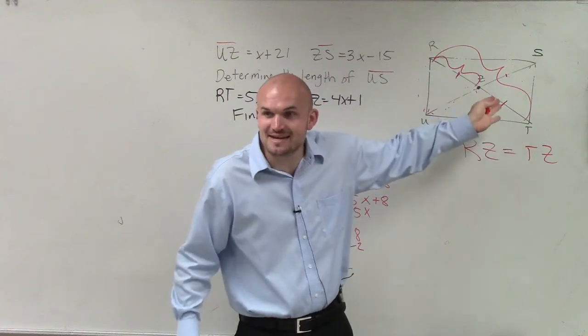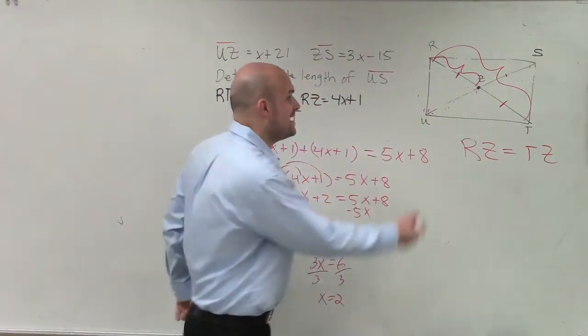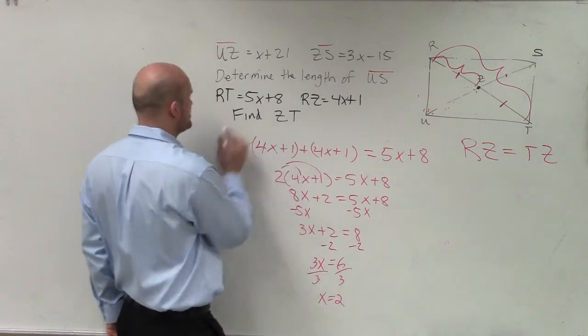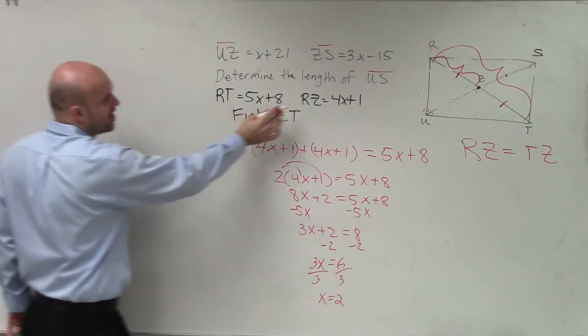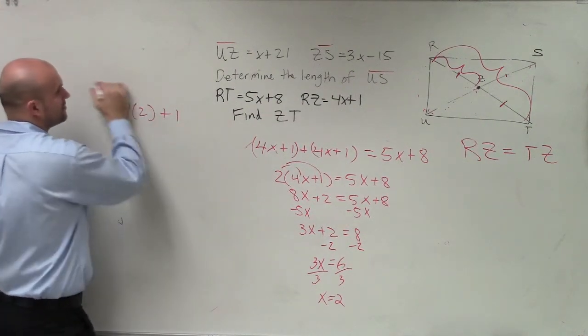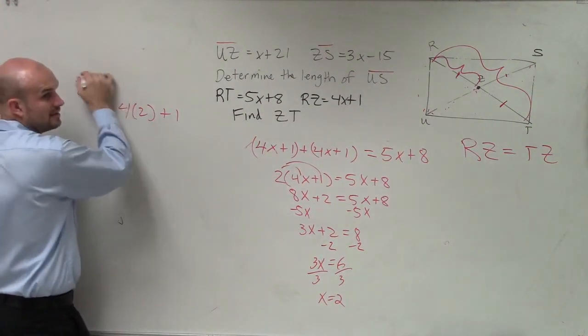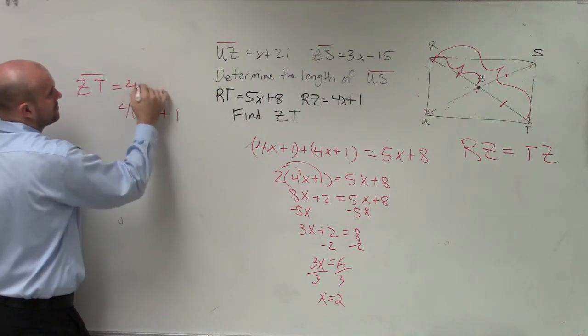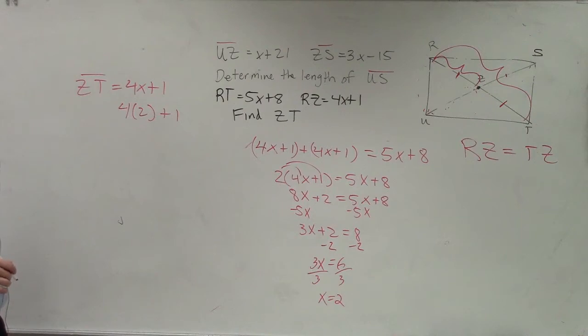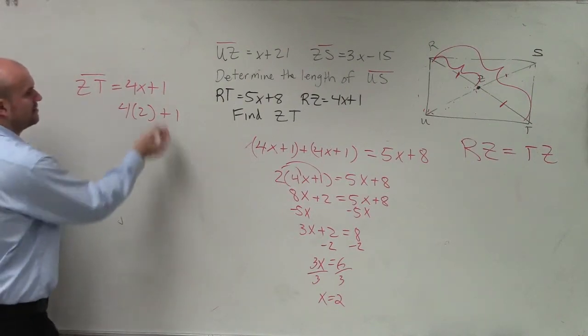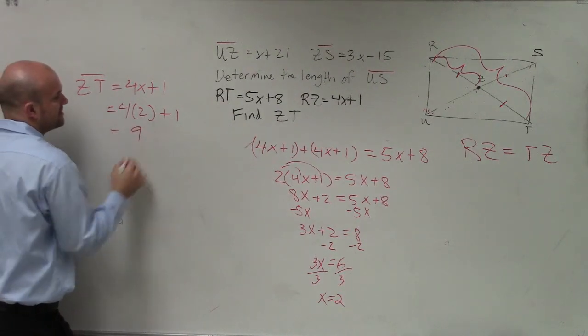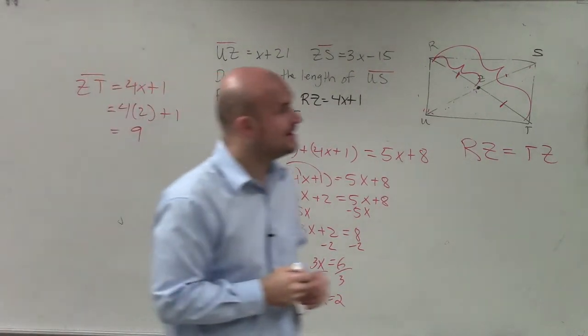RZ is exactly the same thing as TZ. So if I need to figure out what ZT is, all I need to do is plug in 2 for that formula. Since RZ is the same, it will be 4 times 2 plus 1. 4 times 2 is 8 plus 1 is going to be 9. So ZT for that problem would be 9.